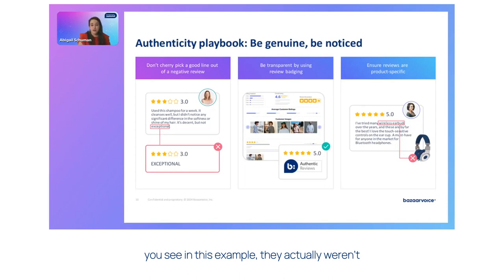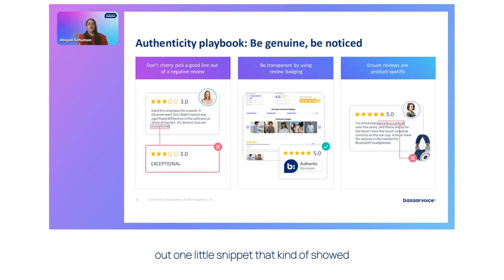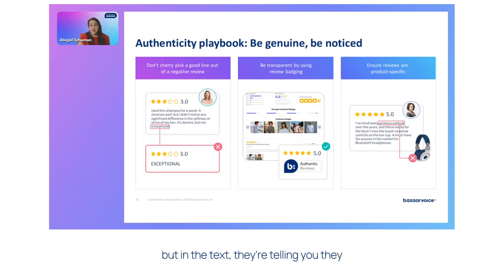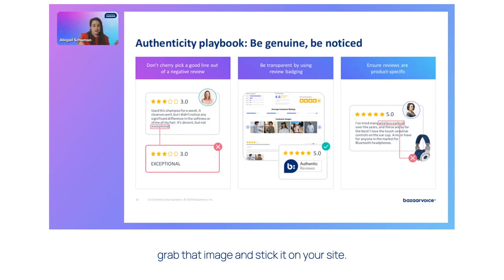In this example, they actually weren't very happy with the product, but we pulled out one little snippet that showed a different point of view. The same thing is really important for social content. If somebody posts a piece of social content and the image is beautiful, but in the text they're telling you they don't really like the product — you shouldn't just grab that image and stick it on your site, because that is being misleading.